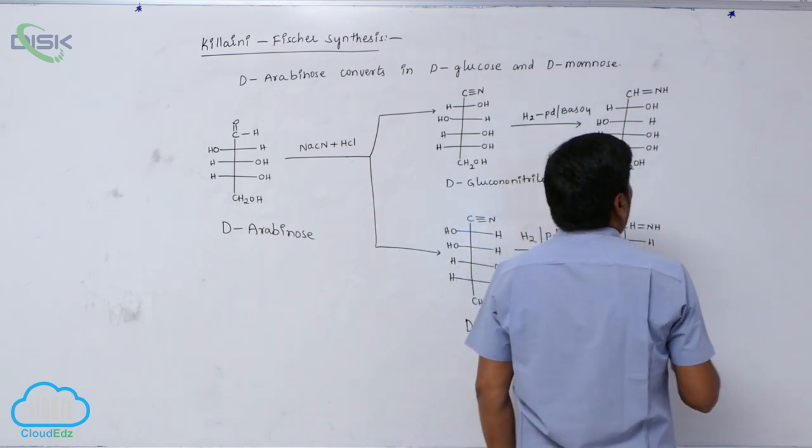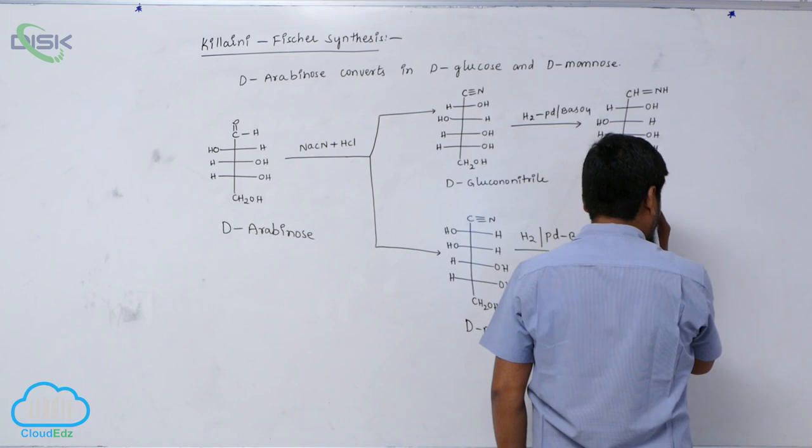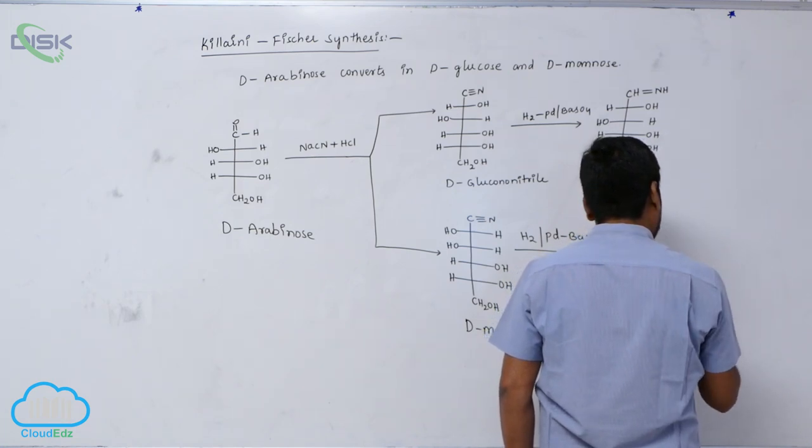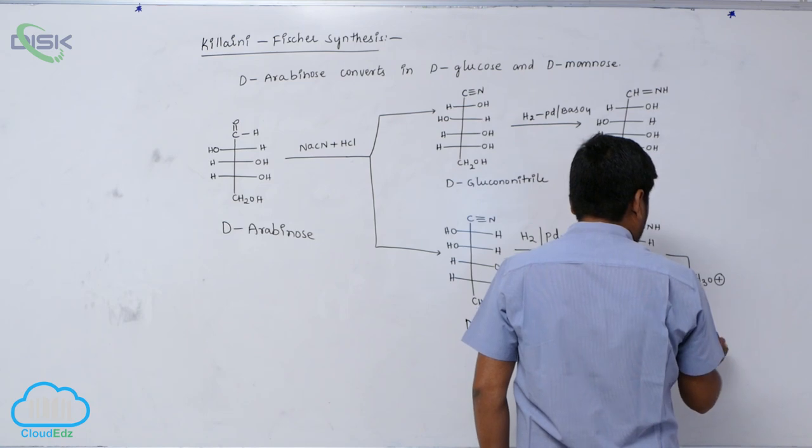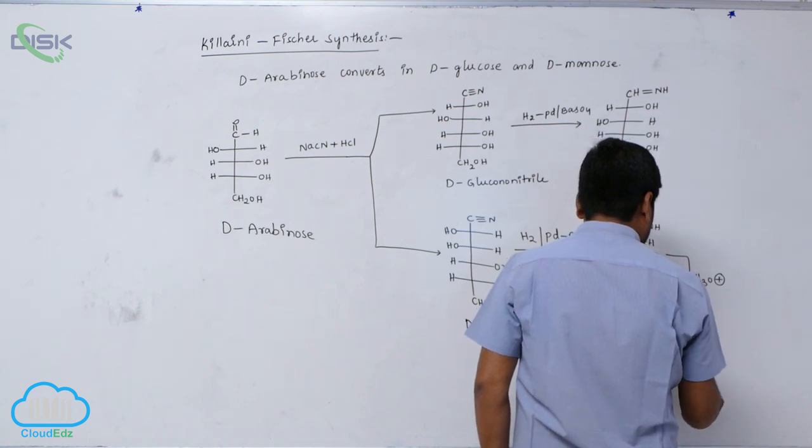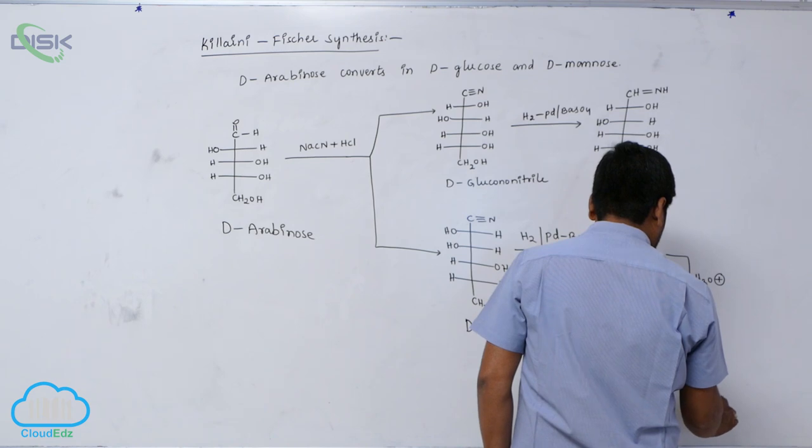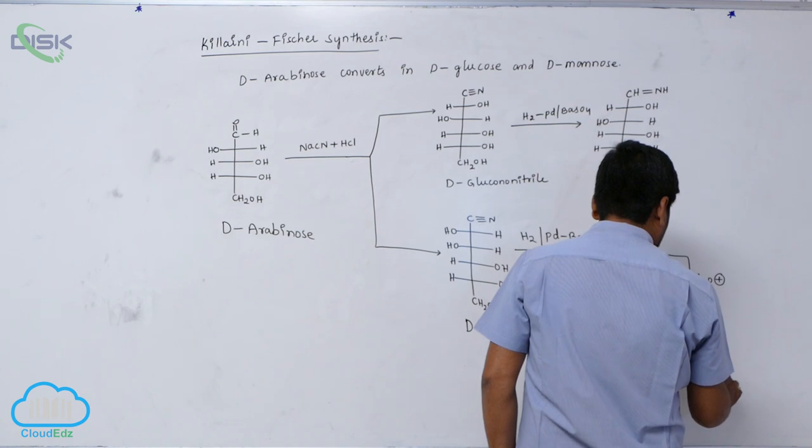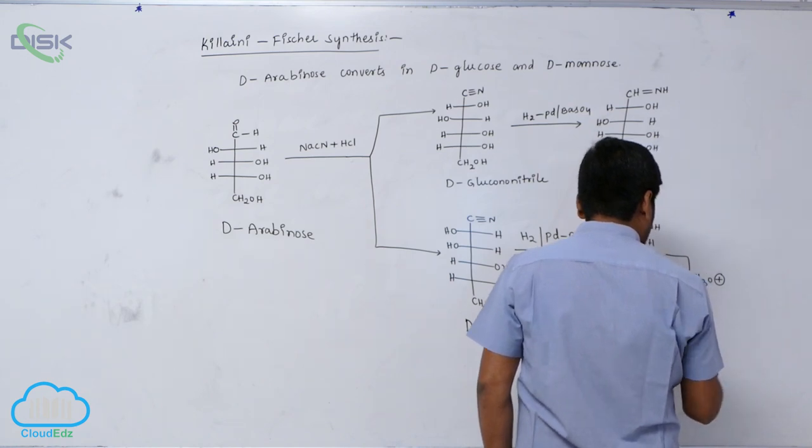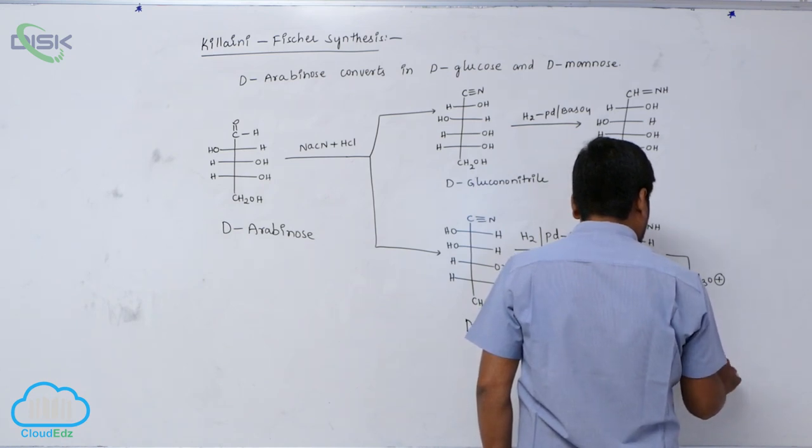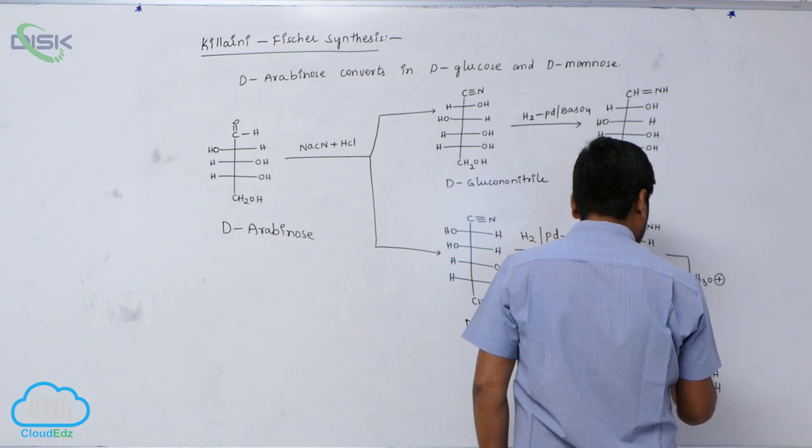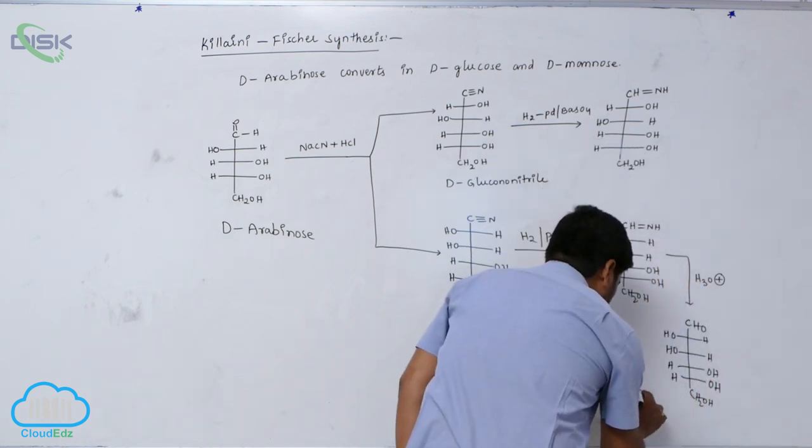This on acidic hydrolysis gives aldehyde, OH, OH, hydrogen, hydrogen. This is known as D-Mannose.